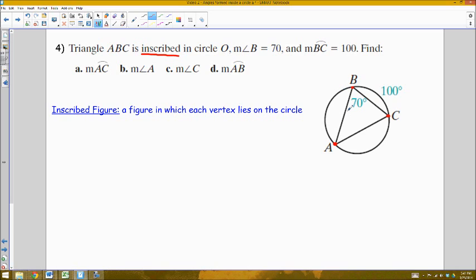With the given information, I know that the measure of angle B is 70, which means that the measure of arc AC, the arc which that angle of 70 degrees is inscribed within, would have to be double that, which is 140.